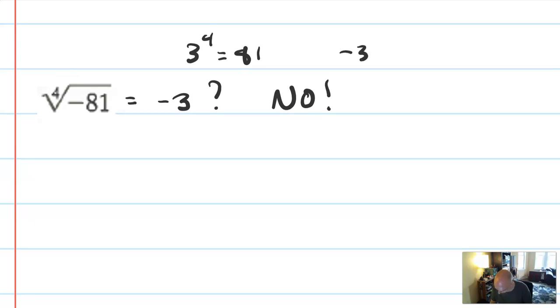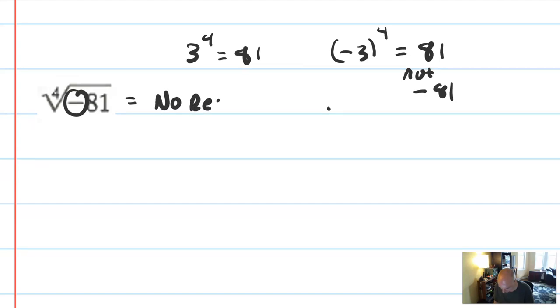Well, because negative 3 to the 4th is also equal to 81, not negative 81. So in this case, the fourth root of a negative number is imaginary. Or I'm going to write no real solution.